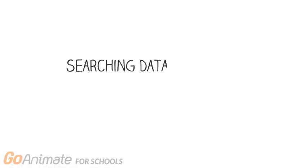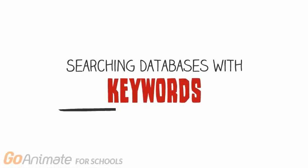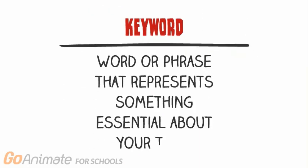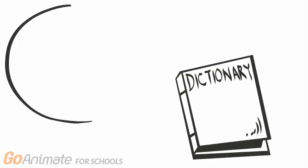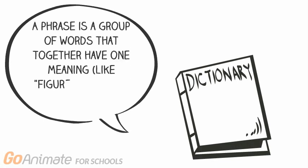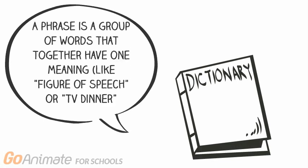Searching a library database is most effective when you use keywords. A keyword is a word or phrase that represents something essential about your topic. A phrase is just a group of words that together have one meaning, like figure of speech or TV dinner.